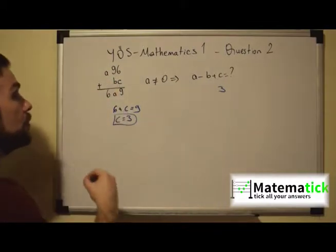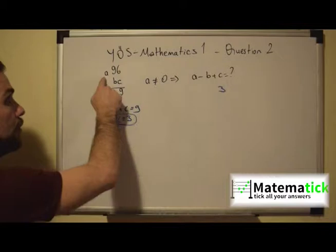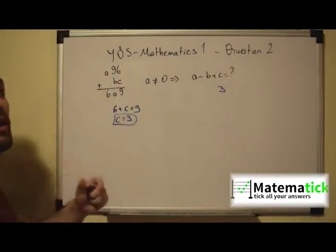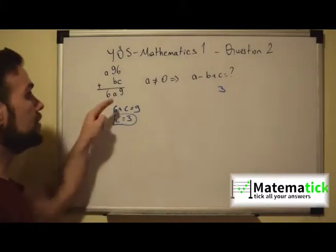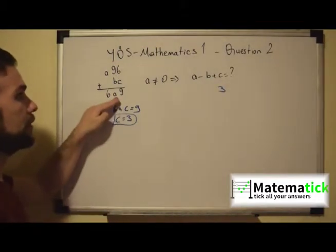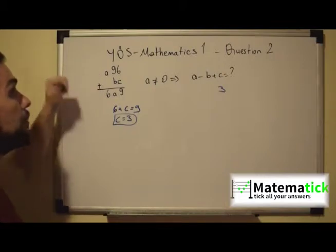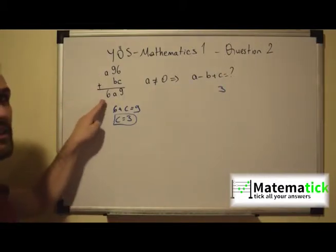And therefore we must already know that the value of A in order for us to give us 6 is going to be A plus 1 which will give us 6. Because the remainder that we get from the tens will be given to the hundreds. So A plus 1 will always give us 6.